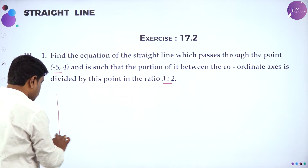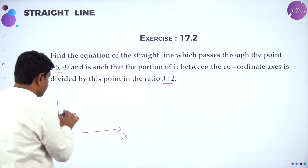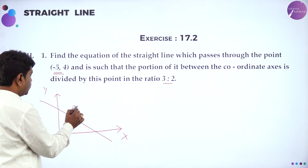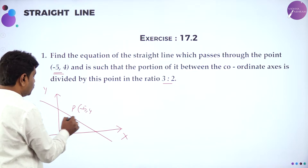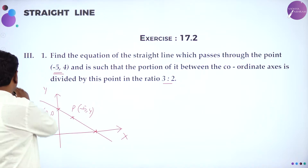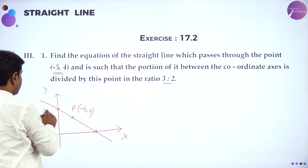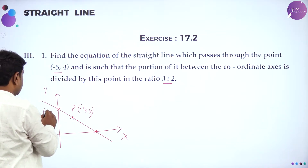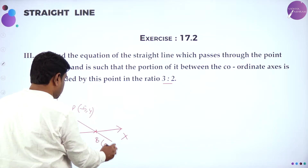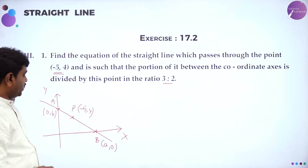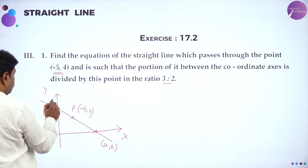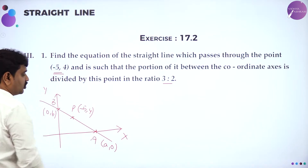So dear students, this is the X-axis, this is the Y-axis, and this is a line. The line is divided by the point (-5, 4). The line joins two points: the point on the Y-axis, which is in the form (0, B), and the point on the X-axis, which is in the form (A, 0). If you find A and B — where A is the X-intercept and B is the Y-intercept — that is more than sufficient.